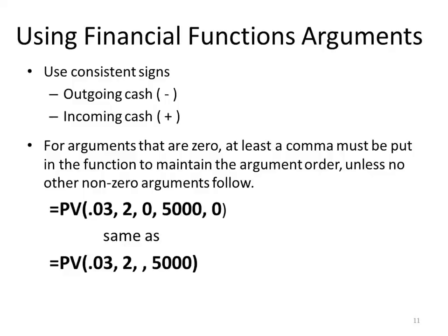For arguments that are 0, at least a comma must be put in the function to maintain the argument order, unless no other non-zero argument follows. For example, in a PV function with arguments 0.03, 2, 0, 5000, 0 — the third argument is 0, so I don't have to put that 0 in; I can just put a comma as a placeholder and the function assumes it's a 0. Likewise, if there are 0s at the end of the function, I don't have to put those in either.